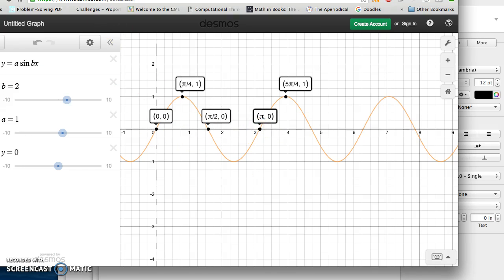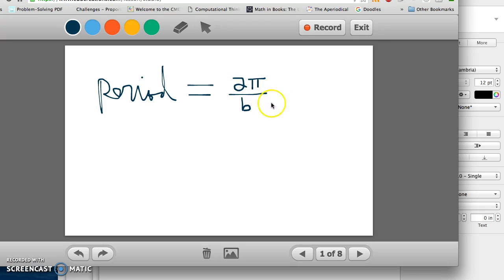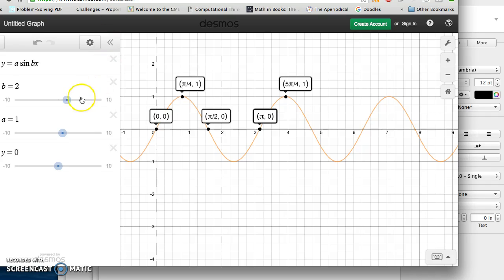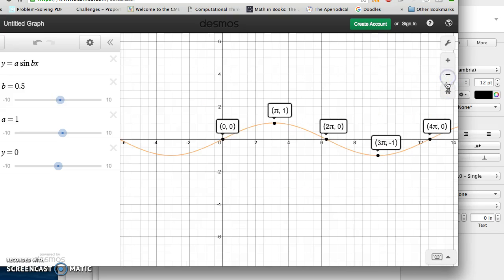So what the relationship is then, basically the period of the sine function is 2pi over b. So when b doubles, the period shrinks by half. And it follows that if b gets smaller, the period will grow. And sure enough, if b shrinks by half to 0.5, when the period, now I'm going to zoom out, is 4pi, so the period doubles. So it's an inverse relationship between b. So the higher b is, the lower the period is.